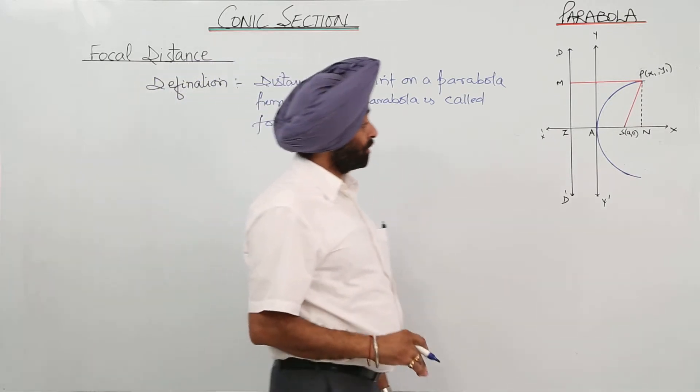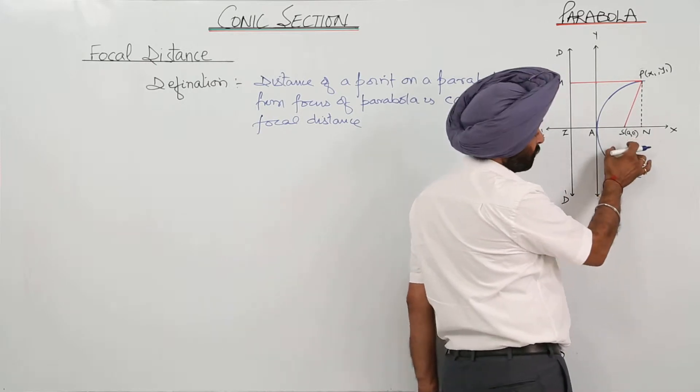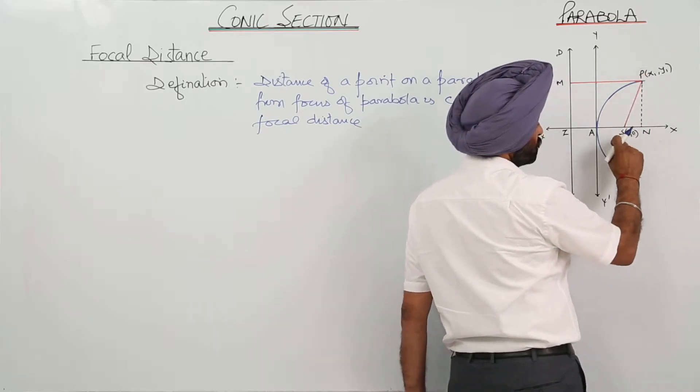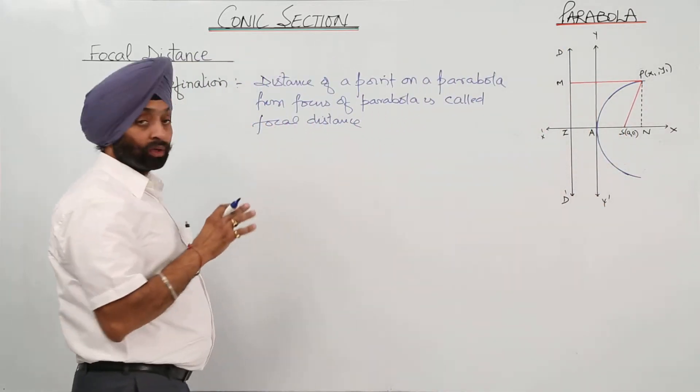Now a figure has been drawn here. Where is the focus? S is the focus. P is the point on a parabola. So SP is a focal distance.